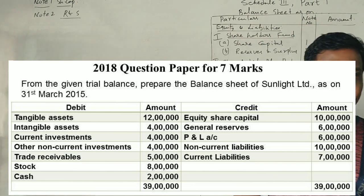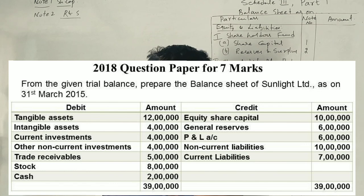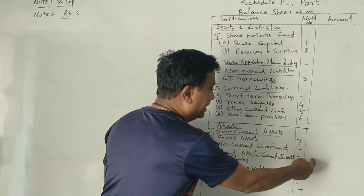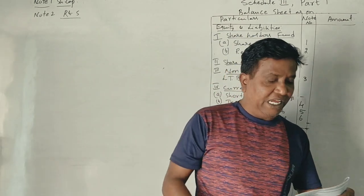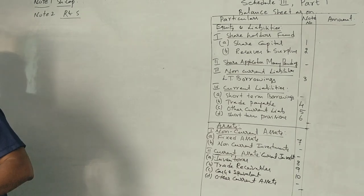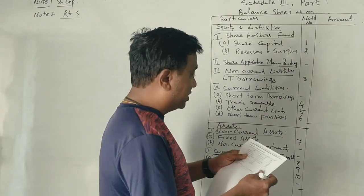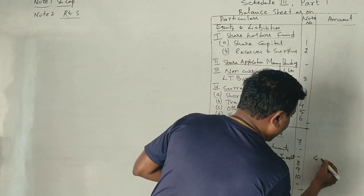Current investment. Current assets separate, 1 point. Current investment note back. Performer. Current investment 4 lakhs.